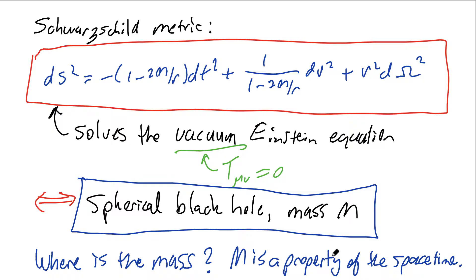Sometimes you'll hear someone say that the mass of a black hole is all concentrated at the singularity. There may be some sense in which that's correct, but it leads you to view the mass as concentrated at a physical location inside the black hole. That's not the right point of view. The singularity is actually not a location in space — it's a set of events in the future. So instead of asking where is the mass, we should be asking when is the mass. To understand these statements, we need to go back and examine carefully the causal structure of the spacetime described by this Schwarzschild metric.